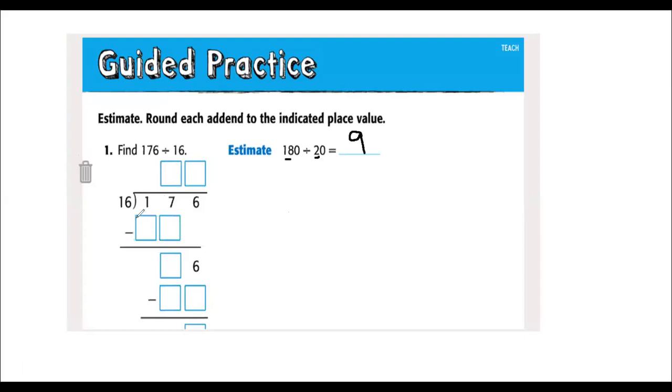And since I'm dividing I'm going to remove the zeros. So if I use the inverse operation multiplication, 20 times 9 should be—let me correct that—20 times 9 should be 180.